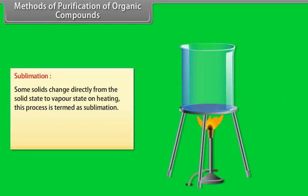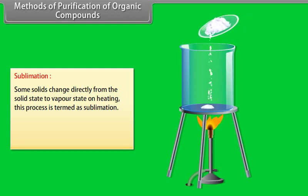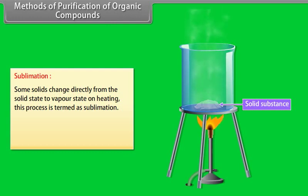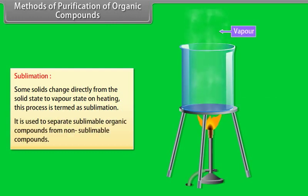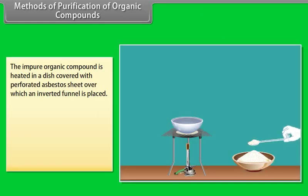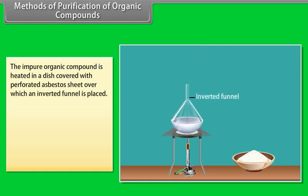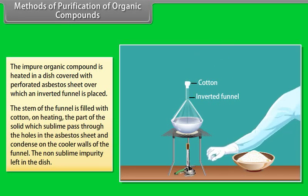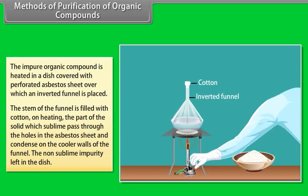Sublimation: Some solids change directly from the solid state to vapour state on heating. This process is termed as sublimation. It is used to separate sublimable organic compounds from non-sublimable compounds. The impure organic compound is heated in a dish covered with a perforated asbestos sheet, over which an inverted funnel is placed. The stem of the funnel is filled with cotton, and on heating, the part of the solid that sublimes passes through the holes in the asbestos sheet and condenses on the cooler walls of the funnel.